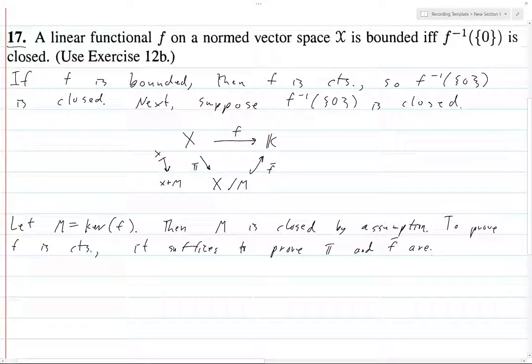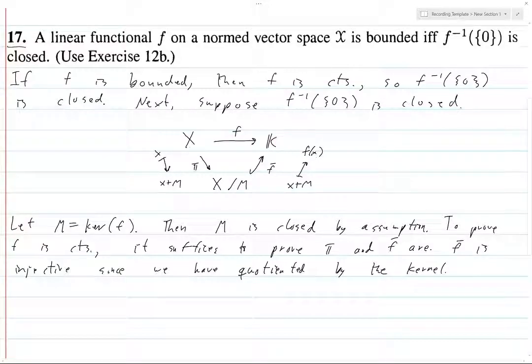f bar is injective, since we have quotiented by the kernel. This sends x plus m to whatever f of x is. So basically, you can have a whole bunch of things in x which map to 0 in k, but they all belong to the element 0 plus m.